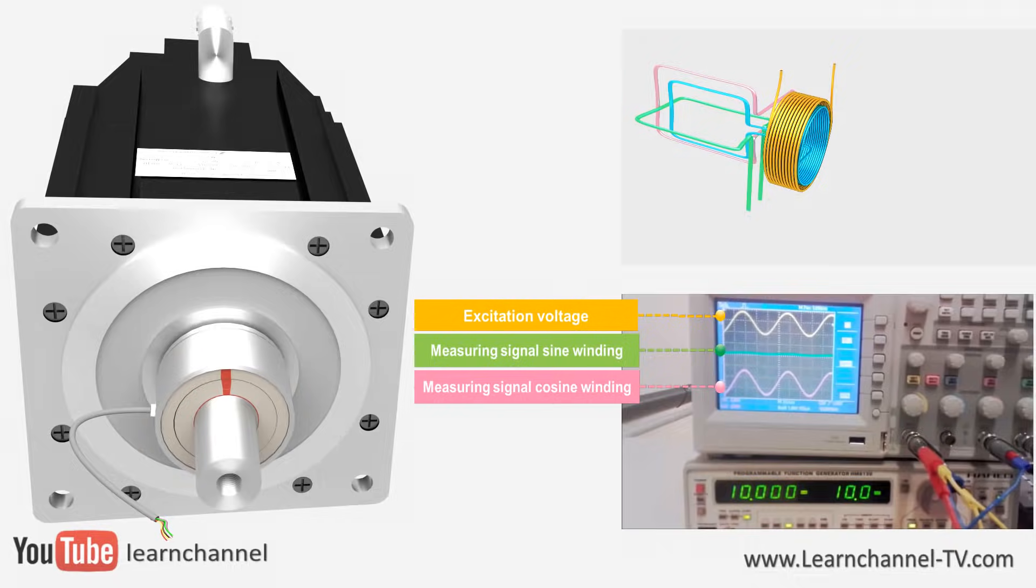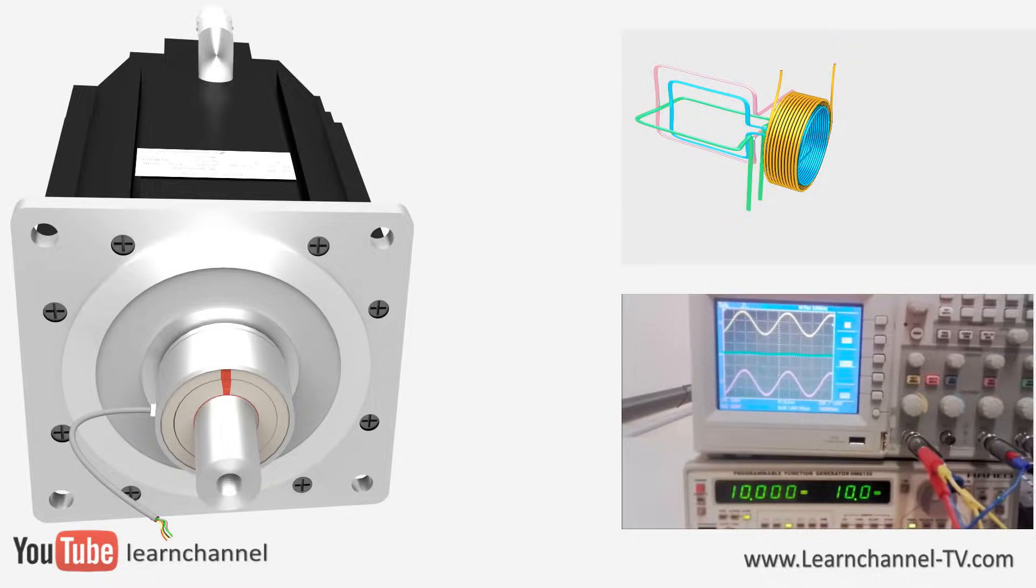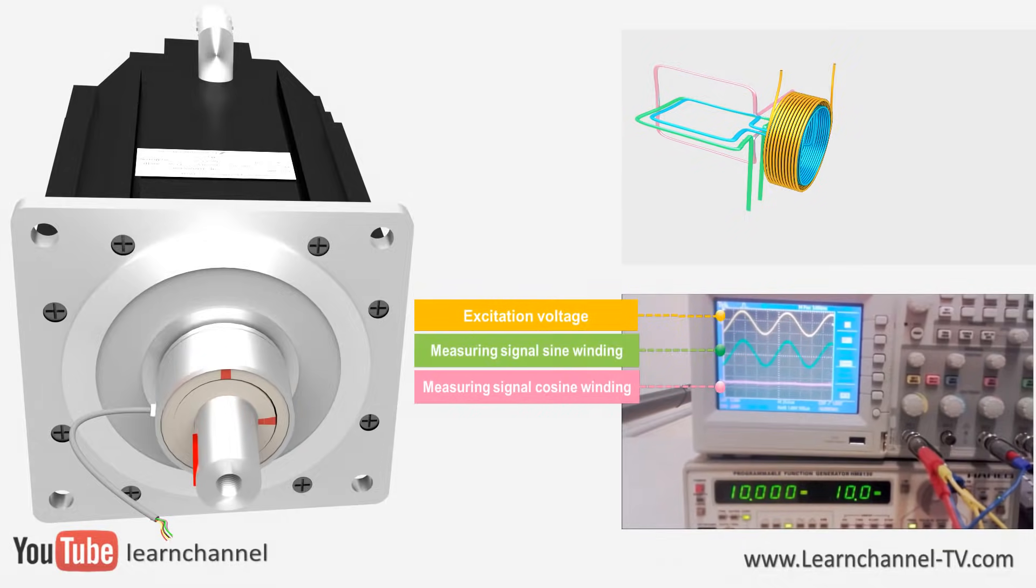And at zero degree shaft angle, the cosine wave also has its maximum. If the rotor winding and measuring winding are at a right angle to each other, no voltage is induced. Let's turn the motor shaft 90 degrees and we can prove all these statements.